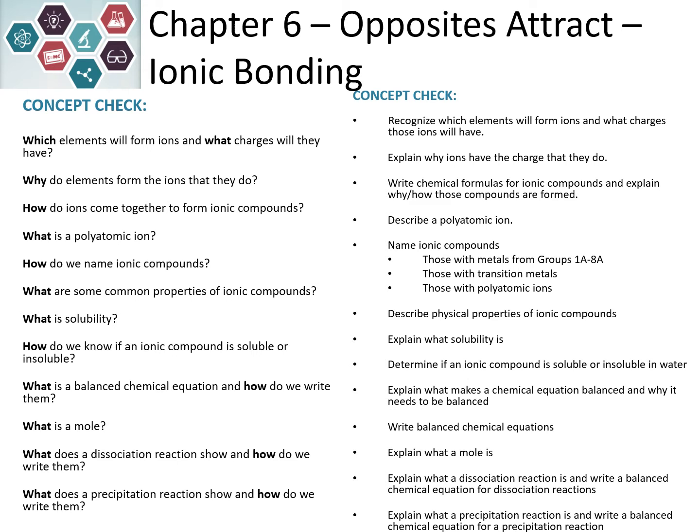In Chapter 6, we're going to look at ionic bonding. Ionic bonding is when we take an element and we either add or subtract electrons to form a charge. Once those charges are formed, we call them ions. And because if we have a positive and a negative ion, they're going to attract to each other and form an ionic compound. We're going to be looking at the charges they make and how they come together to form ionic compounds.